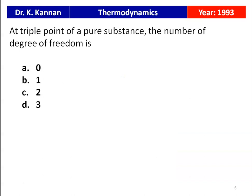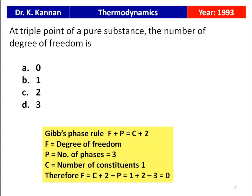At the triple point of a pure substance, the number of degrees of freedom is 0, 1, 2, or 3? From the Gibbs phase rule: F + P = C + 2, where F is the degree of freedom and P is the number of phases. At the triple point, 3 phases coexist — solid, liquid, and vapour — and the number of constituents C equals 1 (water). Substituting: F = C + 2 − P = 1 + 2 − 3 = 0. The number of degrees of freedom at the triple point is 0.